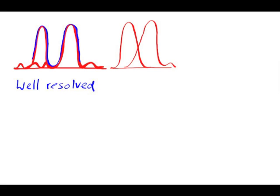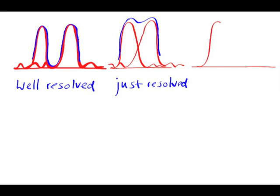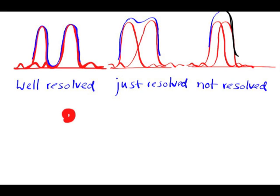If the central maximum of one of the sources coincides with the first minimum of the other, the sources will be just resolved. This condition is called the Rayleigh criterion. If the two central maxima are any closer than that, the points will not be resolved.